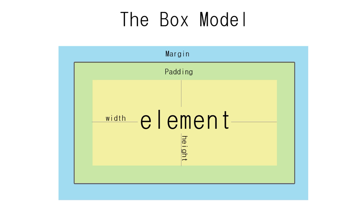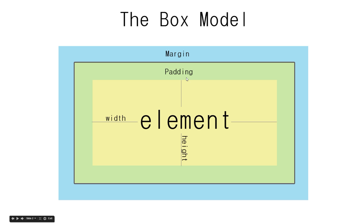So what exactly is the box model? The box model is a way that elements represent themselves on a page in terms of space. Say for example we have an element in the middle — any block level element, could be a p tag — and we give that p tag a specific width and a specific height; that's going to control the horizontal and vertical spacing that element takes up on a page.